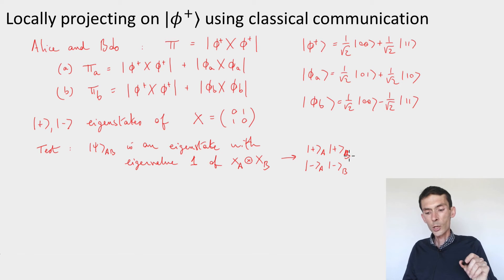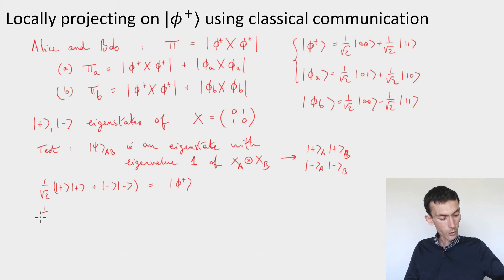So this is not what I claimed. I claimed that it was implementing the projector on the span of |φ⁺⟩ and |φ_A⟩. But these are equivalent. Because if I take the sum of |+,+⟩ plus |−,−⟩ and I normalize by 1/√2, what do I get? Exactly |φ⁺⟩. And if I take their difference now, 1/√2 (|+,+⟩ minus |−,−⟩), what do I get? Well